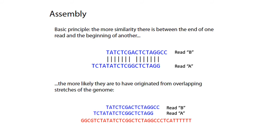The principle of assembly is that if you have two reads — read A and read B — and the suffix of read A is strongly sequence-identical to the prefix of read B, then this gives you confidence that reads A and B come from the same region of the genome, with read A basically followed by read B accounting for their overlap. This is illustrated by the diagram at the bottom of the slide, where you can see read A comes before read B on the genome, even though they overlap a little bit.